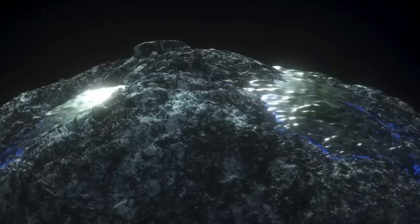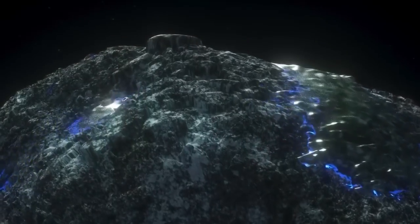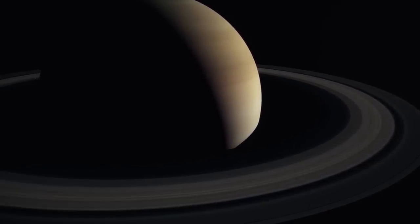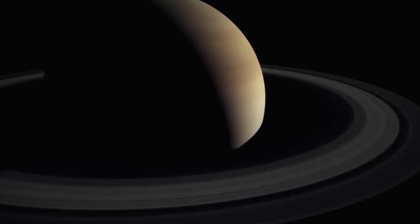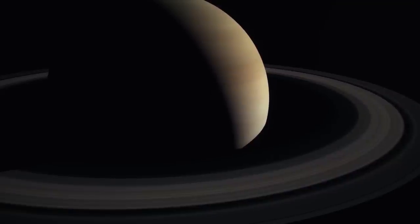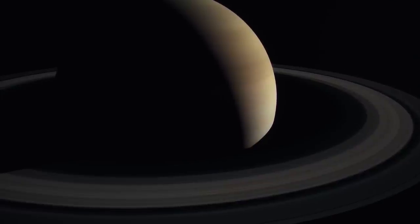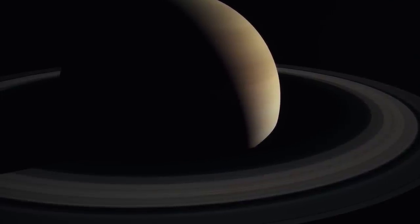But let's go back to Saturn's surroundings, and discover two of its satellites, among the 82 known. Let's start with the moon Enceladus. It is the 14th natural satellite of Saturn by distance, but the sixth by size. It is located in the E-ring, the furthest from Saturn.